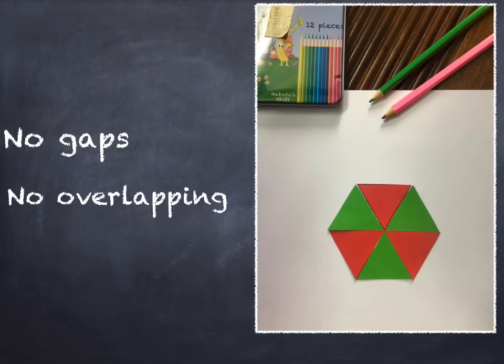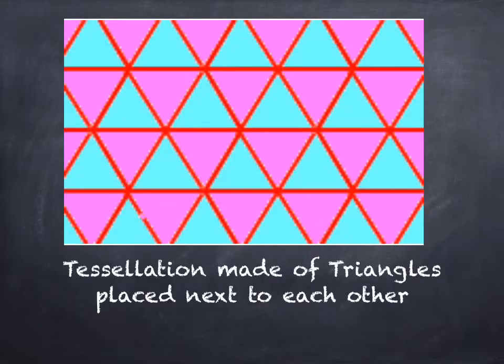You can observe that there are no gaps and no overlapping in the pattern. This is what it looks like when we continue putting equilateral triangles one next to the other.